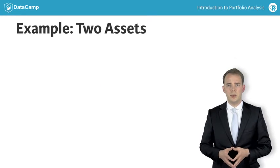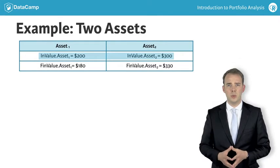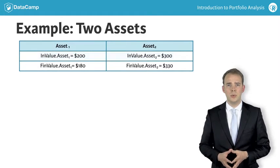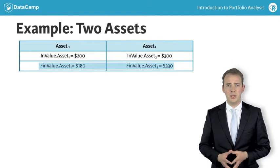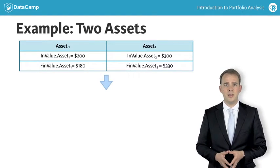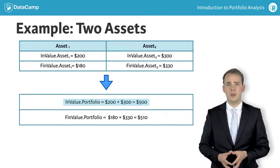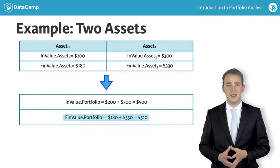As an example, let us consider a two-asset portfolio that invests $200 in asset 1 and $300 in asset 2. The end values are $180 and $330. If we sum the values, we find that the total initial value of the portfolio is $500, while the total final value is $510.